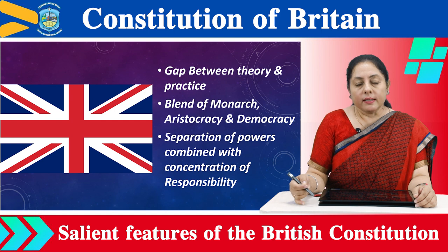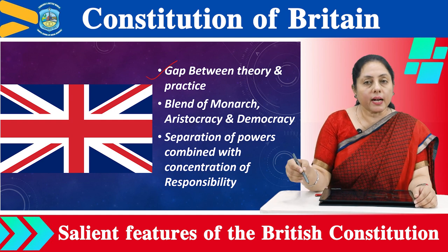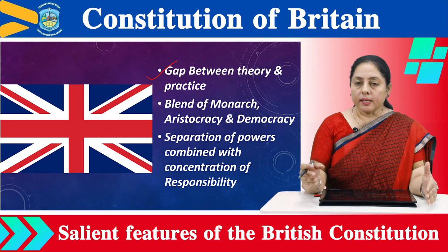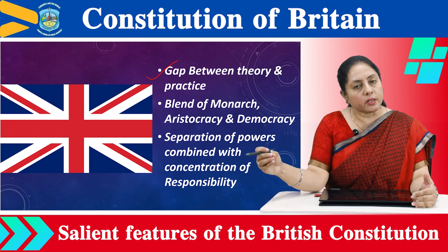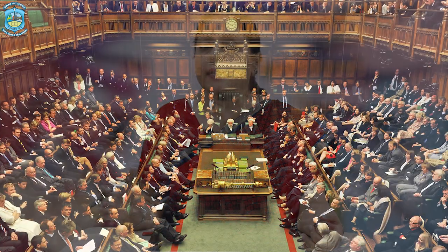Coming up to the next feature: the gap between theory and practice. Theoretically, if we look at the powers of the crown, you will feel that the king or queen of Britain is more powerful. They have the right to choose the prime minister and the power to select the cabinet. The king of England is the chief commander of all three wings, signs treaties and agreements, and has the power to declare war and peace. But practically, all these powers are exercised by the prime minister and his colleagues.